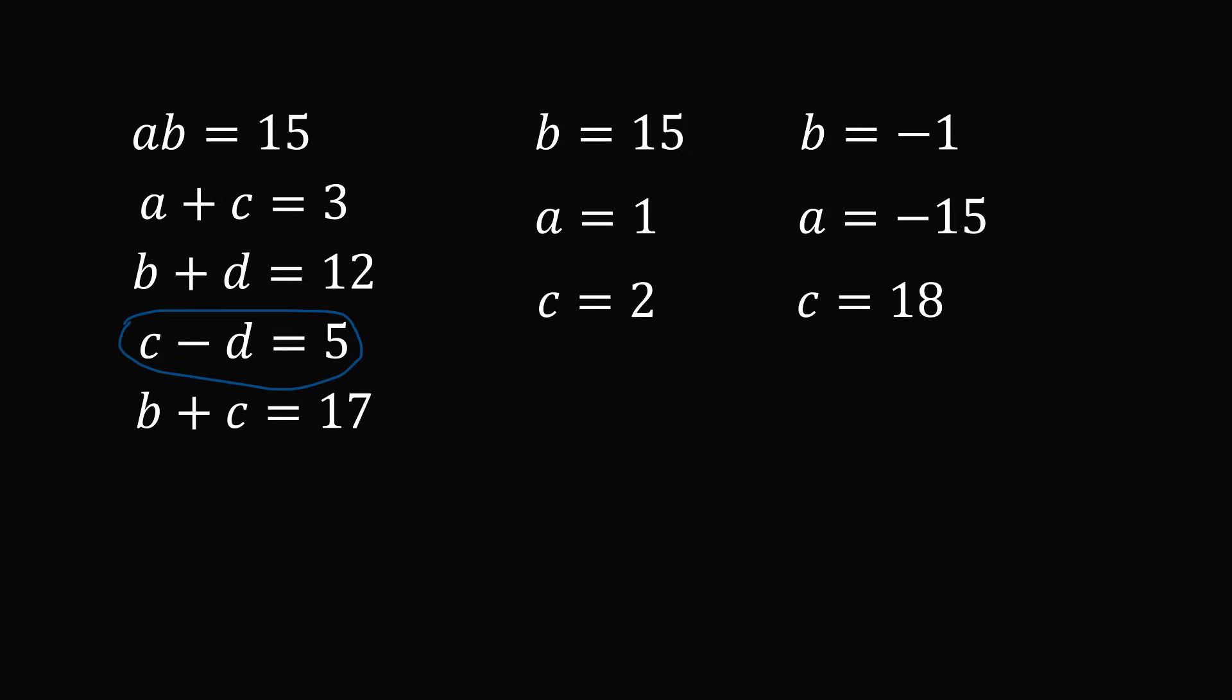Finally, we have c minus d is equal to 5. If c is equal to 2, then d is equal to minus 3. And if c is equal to 18, then d is equal to 13. So, these are the two solution sets.